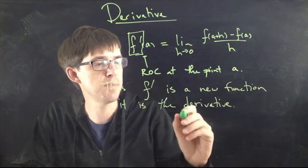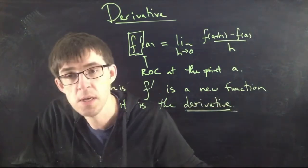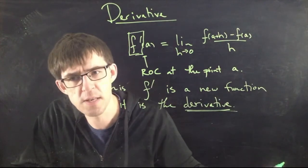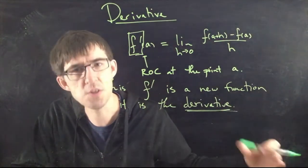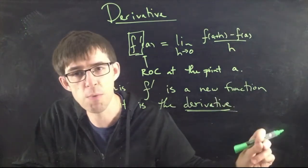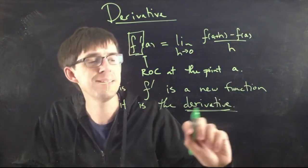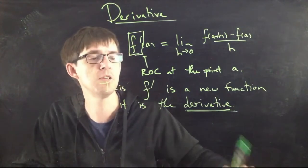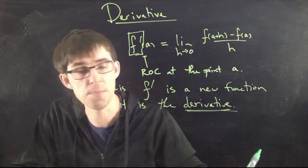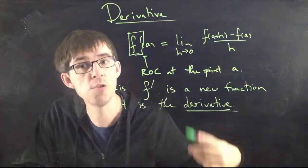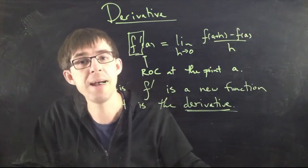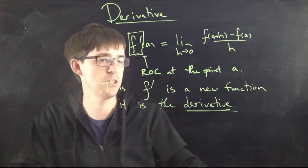This word derivative is the same as, it means the same as instantaneous rate of change. Although usually when I say instantaneous rate of change, the connotation is that I'm talking about a specific moment and what is the speed or the rate at that specific moment. When I say the word derivative, the connotation is more like I'm talking about a new function. You start with an original function f which describes something, and then you can from there create another function f', which is the derivative. It describes how fast the original something is changing.